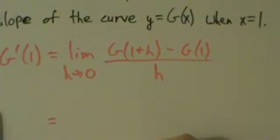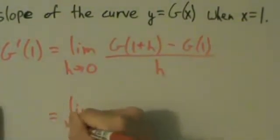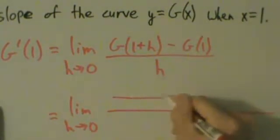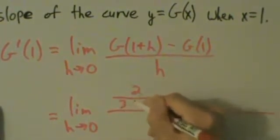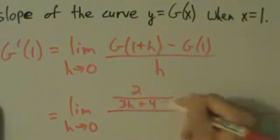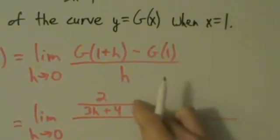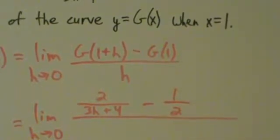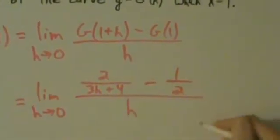So then this is the limit as h goes to 0 of 2/(3h+4) minus 1/2, all divided by h.